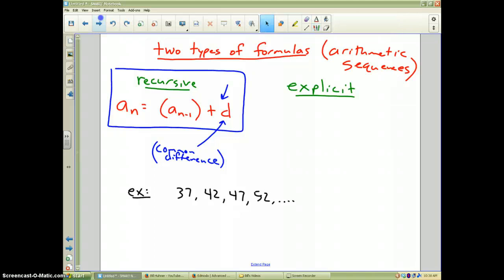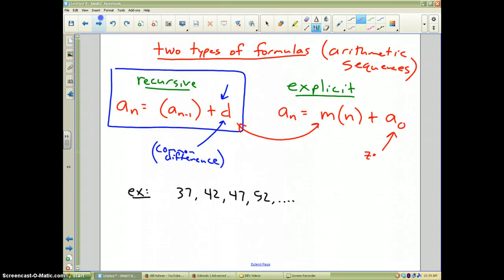Now, how about the explicit formula? Well, this is going to be like y equals mx plus b. The formula is the nth term is equal to the slope, which is also could be called the common difference, whatever that is, times n, which is our position, plus our starting point or our y-intercept, which is accurate. It's actually a sub 0, which is the 0 term in our sequence.